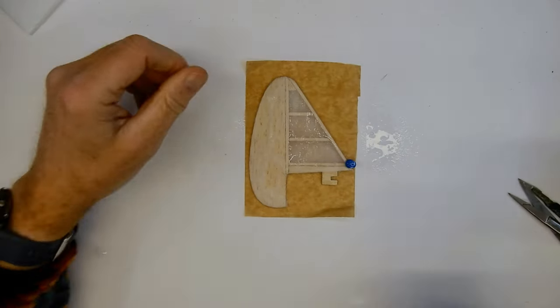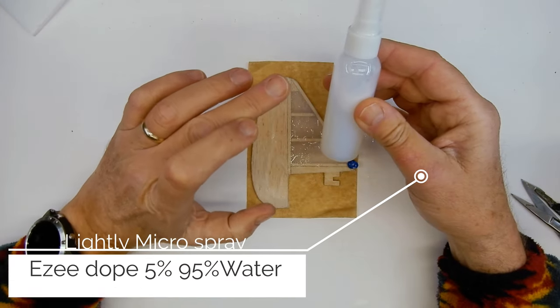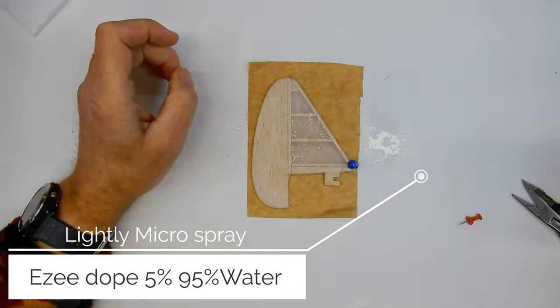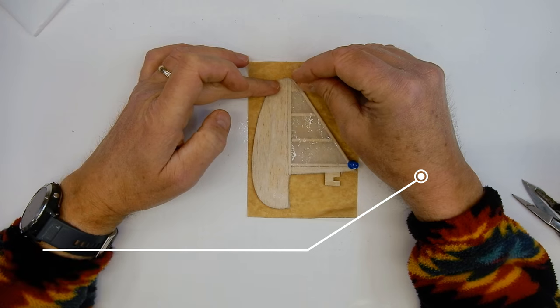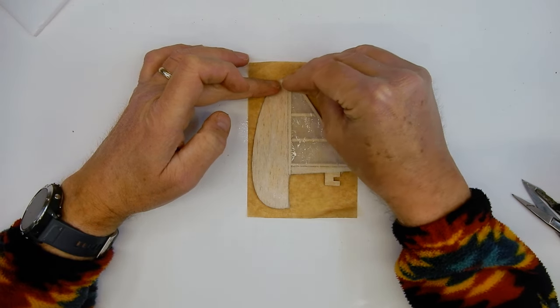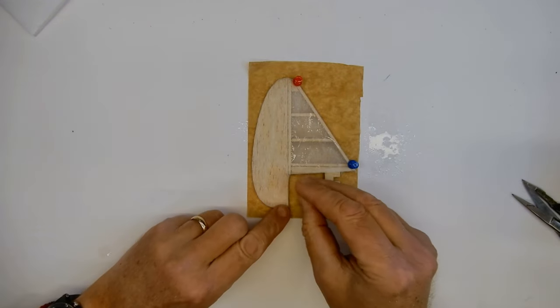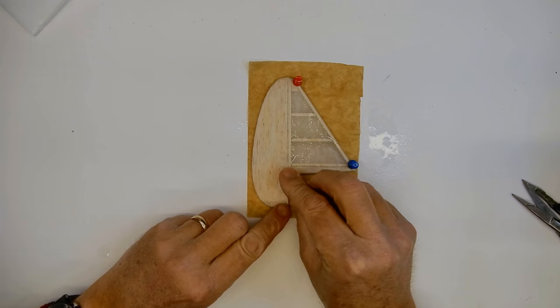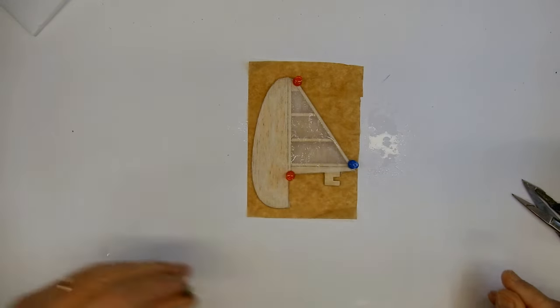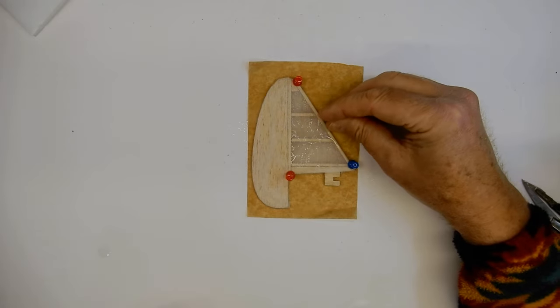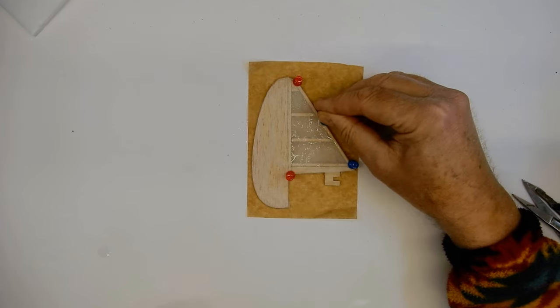I've just sprayed this with my 5% water and easy dope mix on both sides. This is greaseproof paper and I'm adding these pins - not sticking them all the way through the wood - just using them to stabilize the wood to stop it warping because we've just covered it in a water solution.